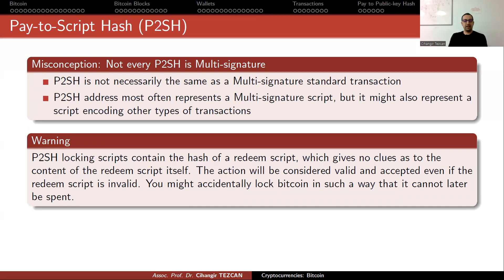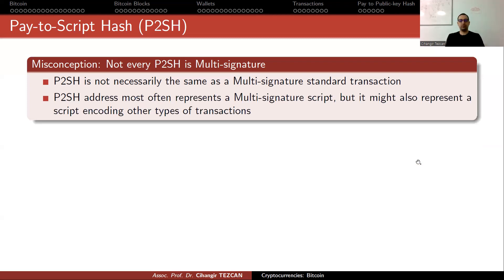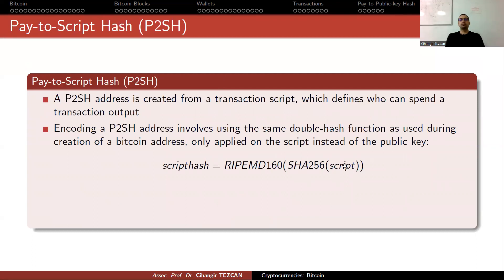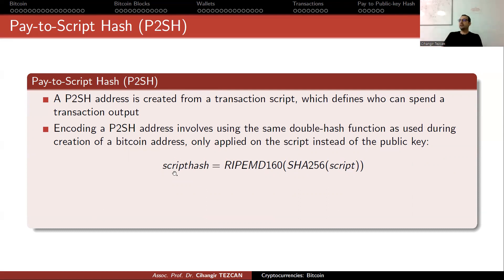Here is a warning: pay-to-script hash locking scripts contain the hash of a redeemed script, which gives no clue as to the content of the redeemed script itself. The transaction will be considered valid and accepted even if the redeemed script is invalid. So you might accidentally lock Bitcoin in such a way that it cannot later be spent. You take the hash of a script, convert it to base-58, and it becomes an address starting with 3. Since we don't have an error-checking mechanism — we don't know the script until it is claimed — you can send money to any address starting with 3 and no nodes will flag it as wrong.